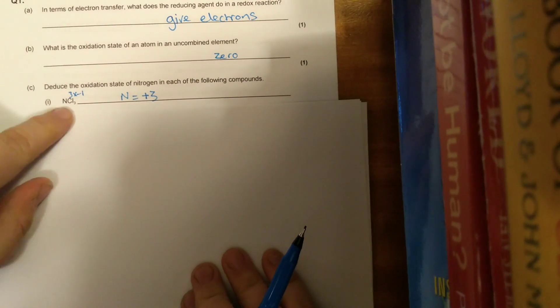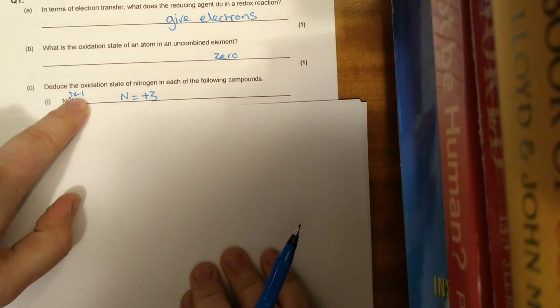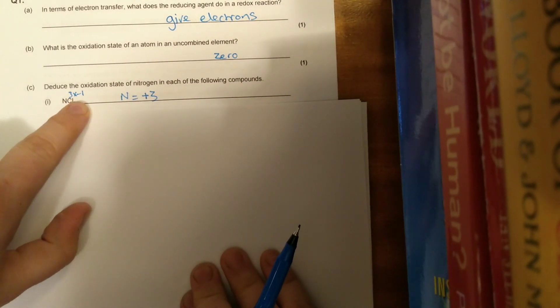We're then asked, what is the oxidation state of an atom in an uncombined element? When it's in its elemental form, that's going to be zero.